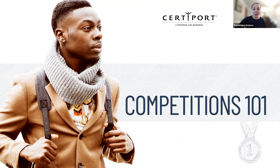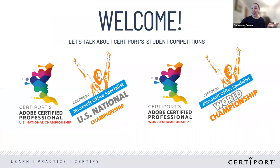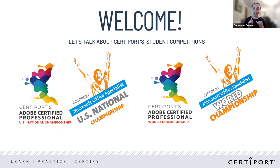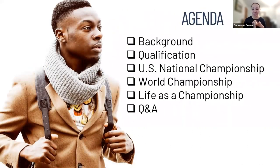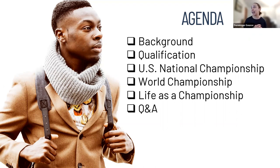Today we are going to dive into what the competitions are and how they can help your students, how they can help you, and how they can inspire students to become certified. We'll talk about our Adobe Certified Professional and Microsoft Office Specialist U.S. National Championships, as well as the World Championships. We'll dive into how to qualify, the background, qualification, and then the specifics of the U.S. National Championship, including where it will be this year, what the prizes are, funding, and we'll talk about the World Championship and life as a champion, and then have some time for Q&A.